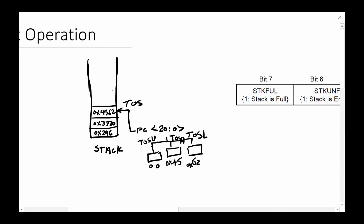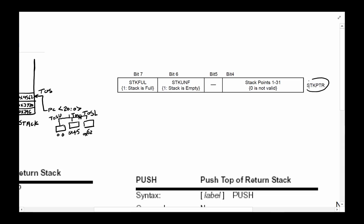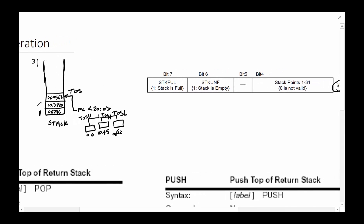How many items can you stack? The first location is not zero — it's actually one. The highest number you can have is 31, so you can have a total of 31 items in your stack. There is another SFR register called the stack pointer. I'd encourage you to go back to the datasheet to look at the exact address of these locations. This stack pointer byte gives an indication of where the top of stack is — for example, top of stack at number three.